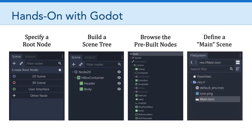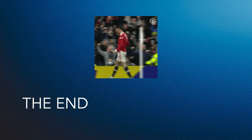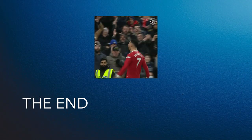These pre-built nodes are what make engines like this so powerful and relatively easy to get started working with. And finally, we're going to learn how to create a main scene — Godot has to have a main scene, which is the scene that starts when the player actually plays the game. So we'll be looking at these four points in our hands-on with Godot. That's all for this overview video. Have a great week, and I'll see you in Canvas.